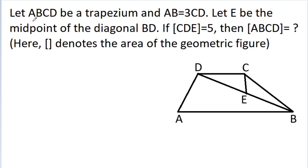In this video, we have given ABCD as a trapezium and AB is equal to 3 times CD. That means if CD is X, then AB is 3X. And E is the midpoint of the diagonal BD, that means DE is equal to BE. And if the area of CDE is equal to 5, then we have to find the area of ABCD.